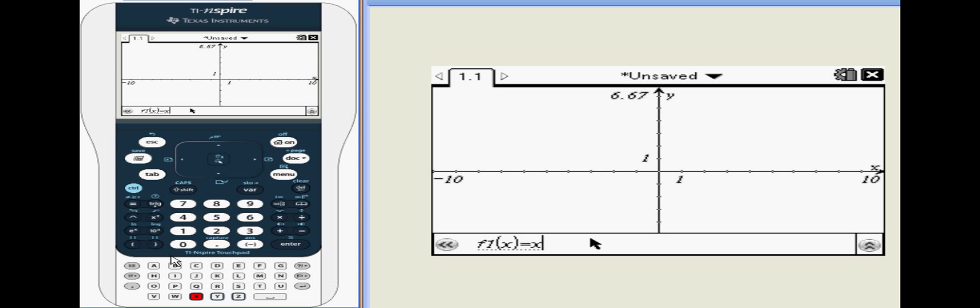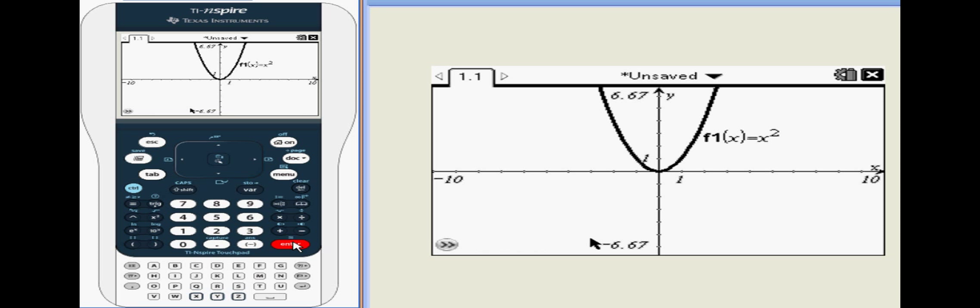Start by adding a graph window. From there you'll need to input your equations. Here, y equals x squared and y equals x plus 1 are entered.